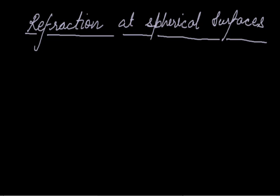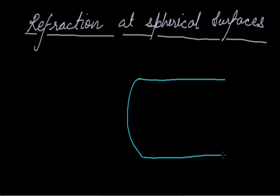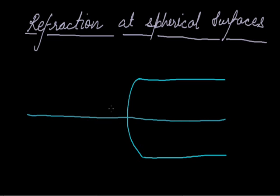For this purpose, let's consider a refractive surface which is spherical. This is a convex spherical surface we are taking. This is the medium in which the light ray after refraction will move. As we know, there is a principal axis which is always defined with respect to the pole and the center of curvature of the surface. This line is called XY, and this is the principal axis of the refractive surface.